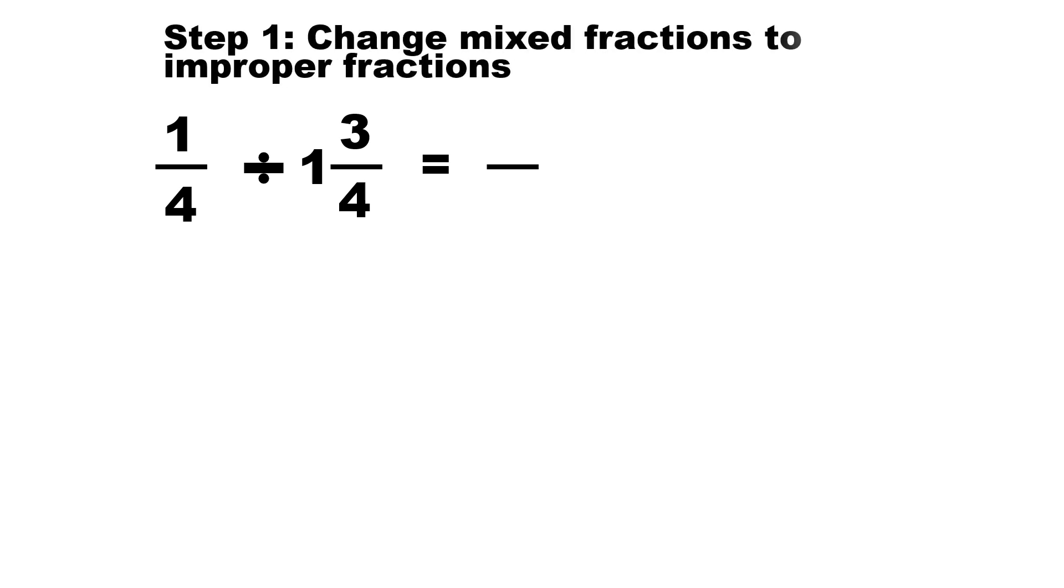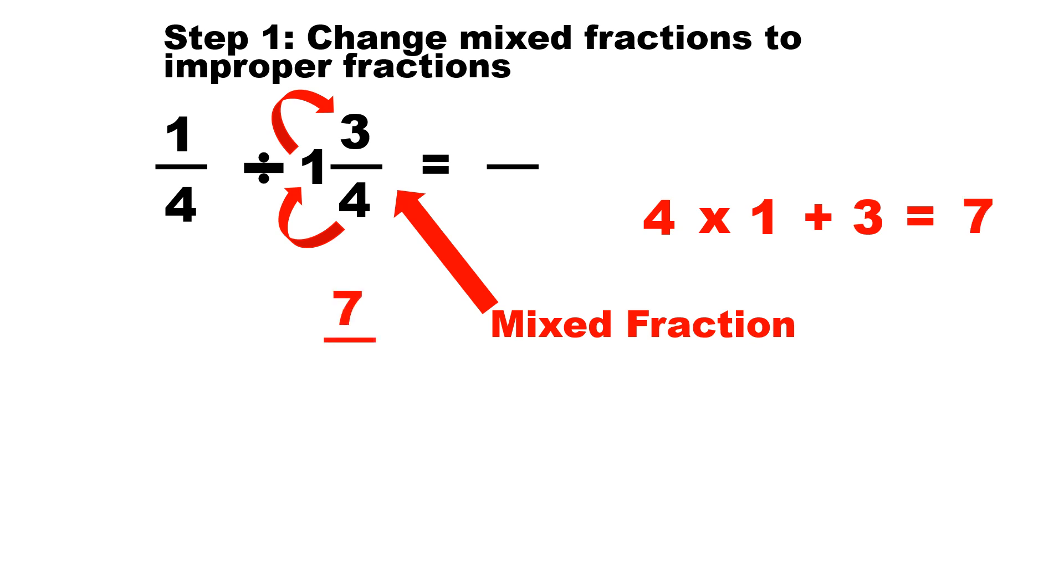Step one is to change the mixed fractions to improper fractions. So the mixed fraction is one and three-fourths. What we do is take the denominator, four, multiply by one, which will be four, plus the three on top, the numerator, and the answer is seven. And we write the fraction seven-fourths right here on the bottom.